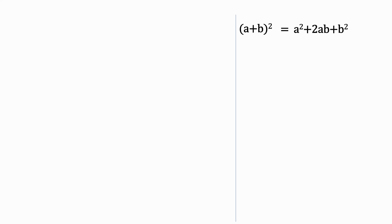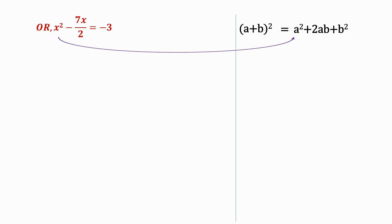As said earlier, we have been trying to solve the equation by completing a square, so we need one side of the equation to come in the form of a² + 2ab + b². We have the equation x² - 7/2 x = -3. Here a = x, so our a² will be x². Let's try and find what b will be. For that, let's write -7/2 x as 2 × x × (-7/4).